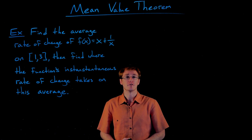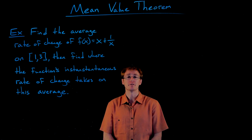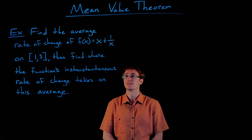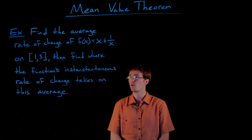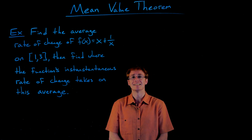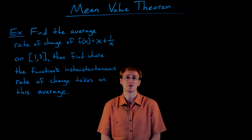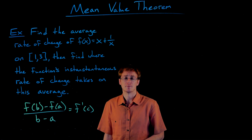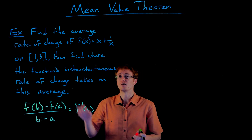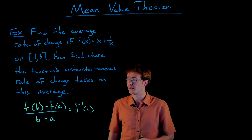Let's look at an example of applying the Mean Value Theorem. We're asked to find the average rate of change of f(x) = x + 1/x on the interval from 1 to 3, and then find where the function's instantaneous rate of change takes on that average value. The Mean Value Theorem guarantees this is possible as long as our function is continuous and differentiable on the interval, which it is here.